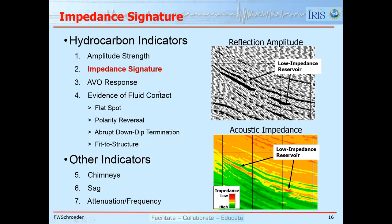We can also look for impedance signature. Here we have regular reflection amplitude data with high amplitudes at certain locations. We can perform seismic inversion to get impedance rather than just reflection amplitude. Low impedance is shown in hot colors — here we see an anomaly going from green into orange and back to green, indicating a low-impedance lens corresponding to the strong amplitude response. We can use low impedance as a way to verify the presence of hydrocarbons.